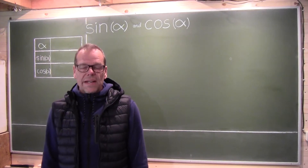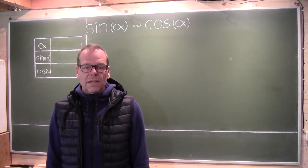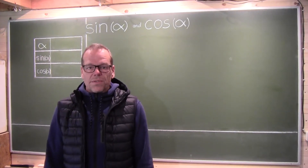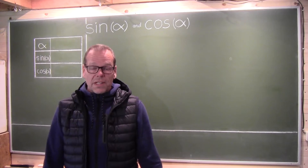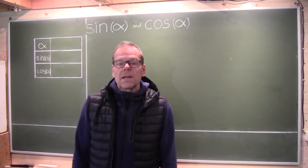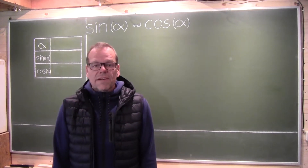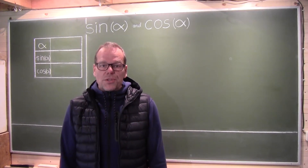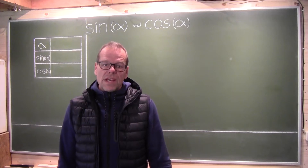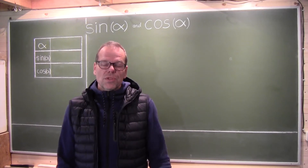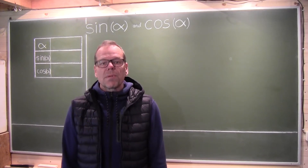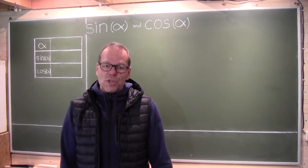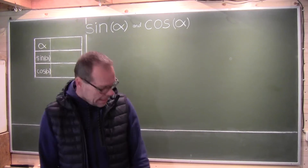What are a sine and a cosine? I'll give you a different answer from the answer you'll typically get. The sine of an angle is a definite measure for the deflection or deviation which occurs when you apply that angle. Let me show you what I mean by that.